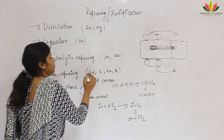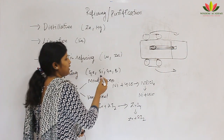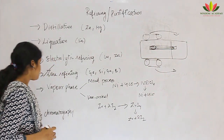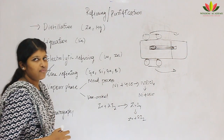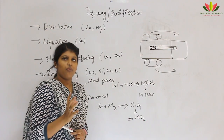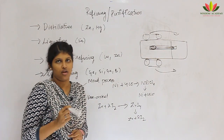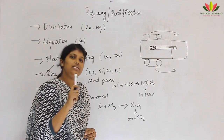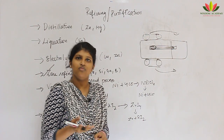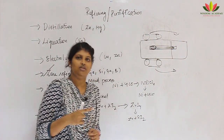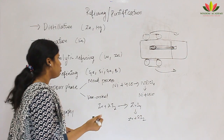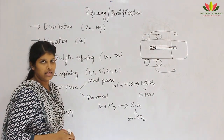The fifth method is vapor phase refining. Two conditions are required: first, the metal must form a volatile compound with a reagent; second, the volatile compound must easily decompose to recover the metal. There are two processes: the Mond process and the Van Arkel method.